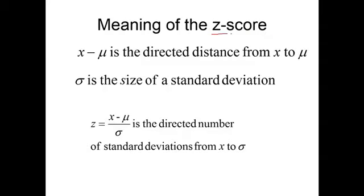What is the meaning of the z-score? Let's break it down into pieces. The numerator, x minus mu, is the directed distance from x to mu, from a data item to the mean. Sigma is the size of a standard deviation. So z equals x minus mu over sigma is the directed number of standard deviations that x is from mu.